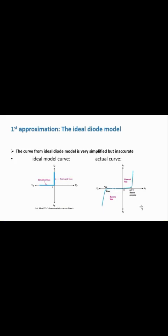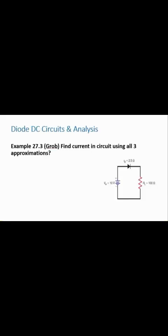Looking at the graphs: the actual curve from a real diode is compared with the ideal model curve. In the ideal model, forward bias shows no voltage drop along the positive x-axis, and reverse bias shows zero current along the negative y-axis. The ideal model graph is very simple — just two lines — but it is very inaccurate compared to the actual curve.